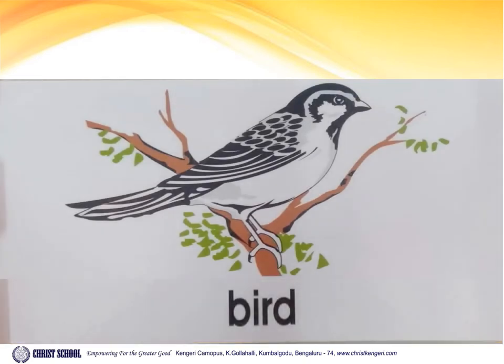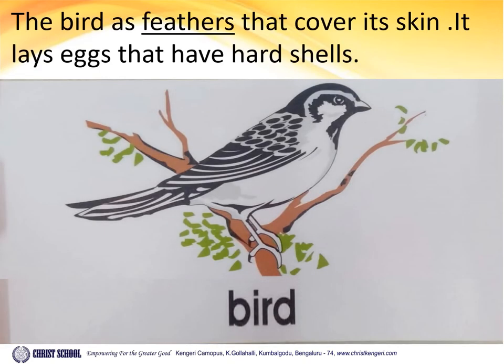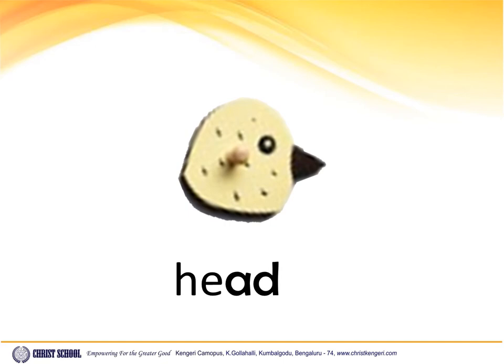Bird. The bird has feathers that cover its skin. It lays eggs that have hard shells. Let us look at the parts of a bird. Birds have a head — a very agile head that moves on the neck of the bird. Agile means able to move quickly and easily.